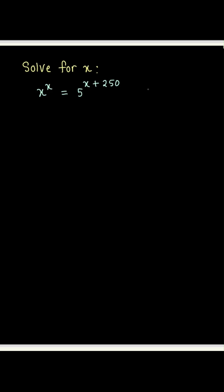The first thing we'll do is make use of the exponent rule that a to the power m plus n can be written as a to the power m times a to the power n. We use this to break down the right-hand side: 5 to the power x plus 250 into a product, 5 to the power x times 5 to the power 250.